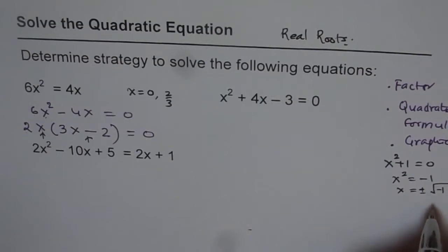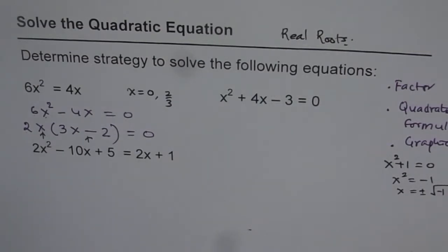But we are not getting there yet. So what you understand here is a quadratic equation can have 0, 1, or 2 solutions. So there is a possibility of not having a solution also.